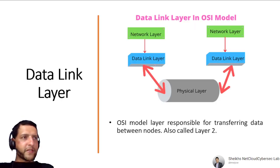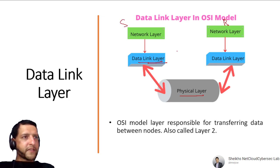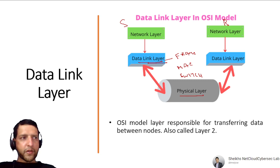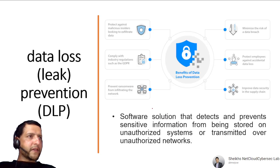The Data Link Layer is the second layer of the OSI model, responsible for transferring data between nodes using frames containing MAC addresses. Switches operate here at Layer 2 (Layer 3 switches can also route). DLP (Data Loss/Leak Prevention) protects against malicious insiders exfiltrating sensitive data, helps comply with regulations like GDPR, prevents ransomware infiltration, minimizes data breach risk, and protects against accidental data loss.